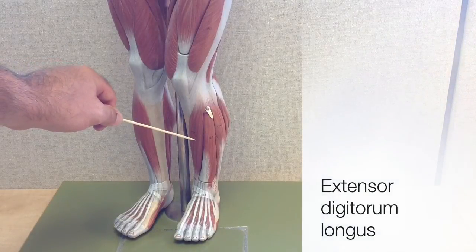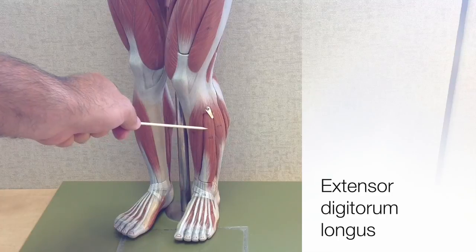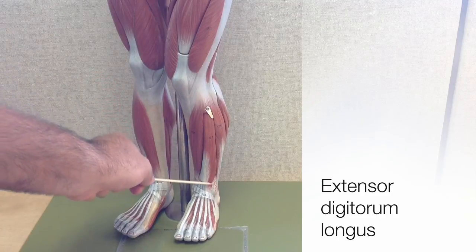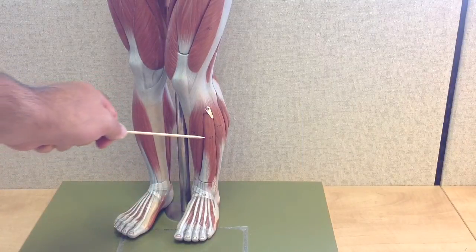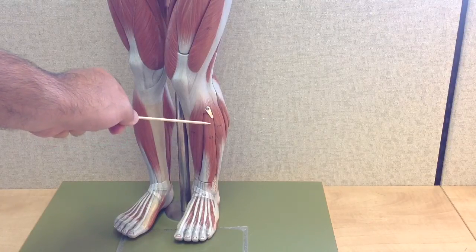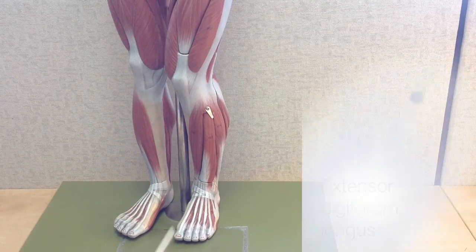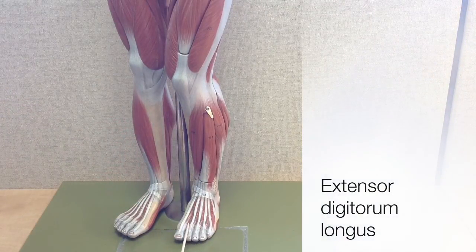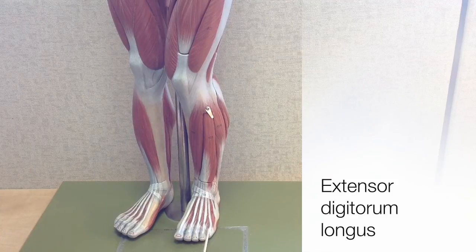Located just lateral to the tibialis anterior is our next muscle. This is the extensor digitorum longus — a great muscle to use as a reference point for the muscles of the lower leg because it is so visually distinct. You can follow the tendons of digits 2, 3, 4, and 5 — not digit 1, the great toe or big toe, but 2 through 5.